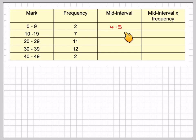The mid-intervals here are going to be 4.5, which is 0 plus 9 divided by 2; 14.5, which is 10 plus 19 divided by 2; and 24.5, which is 20 plus 29 divided by 2.